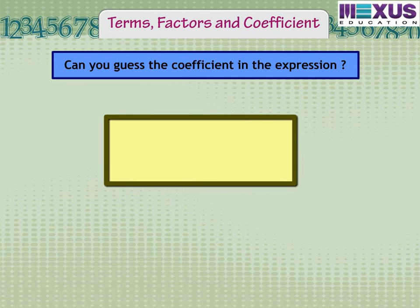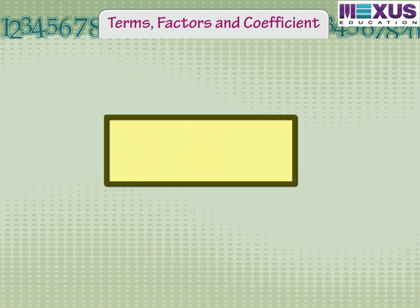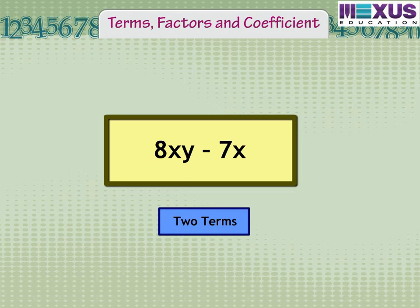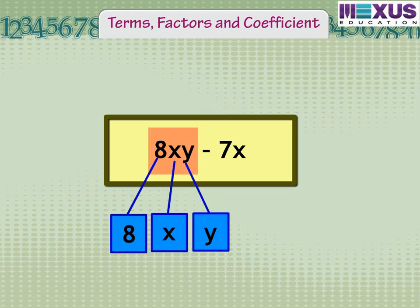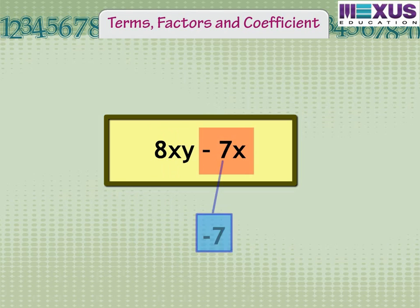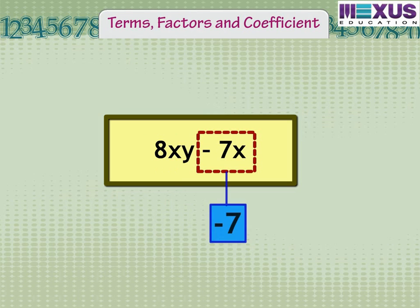Can you guess the coefficients in the expression 3x squared plus 6x plus 2? The coefficient in the term 3x squared is 3, and the coefficient in the term 6x is 6. Let's check one more example: 8xy minus 7x has two terms. The term 8xy is a product of factors 8, x, and y. And minus 7x is a product of factors minus 7 and x. The coefficient in the term 8xy is 8, and in minus 7x it is minus 7.